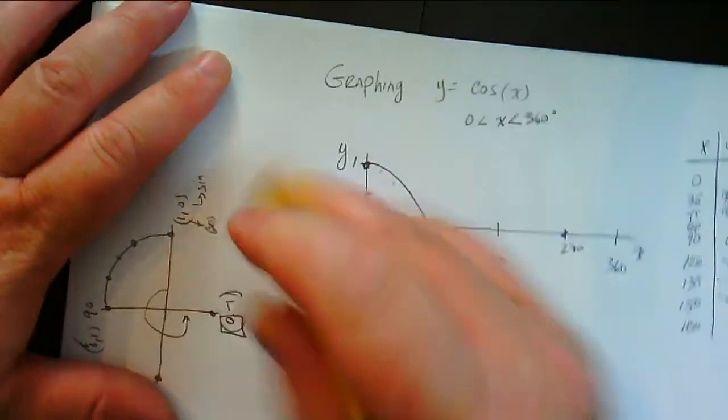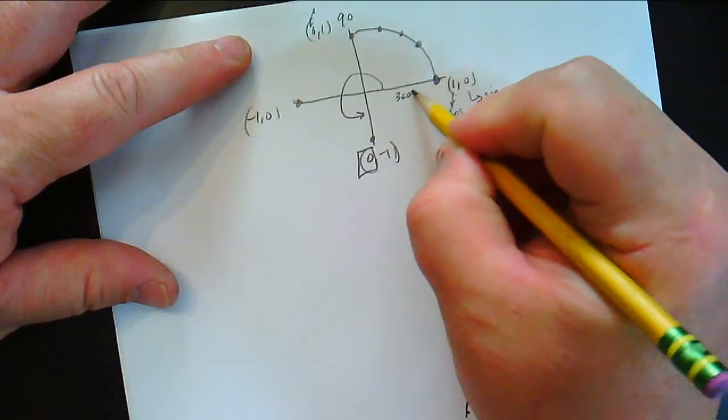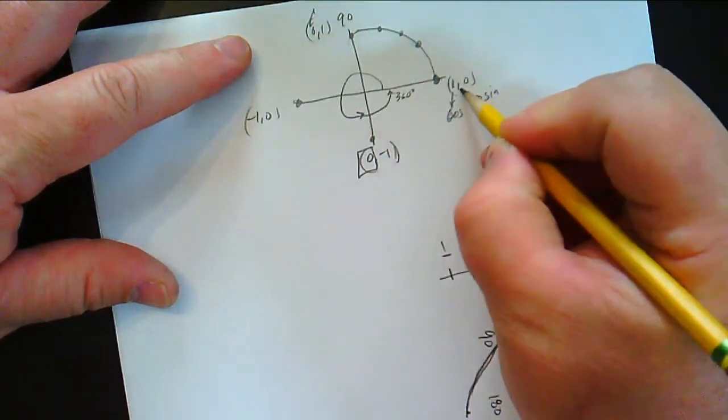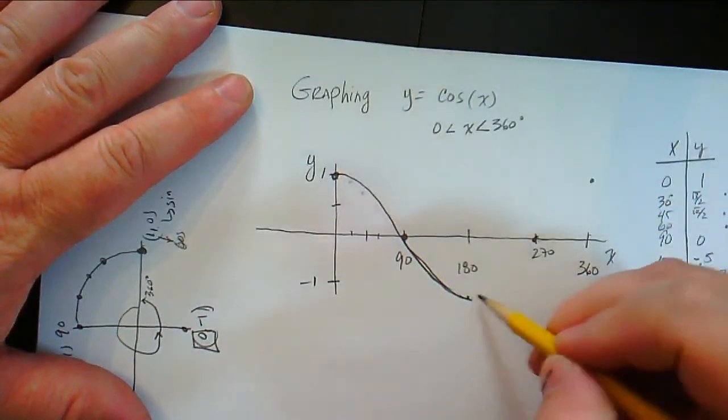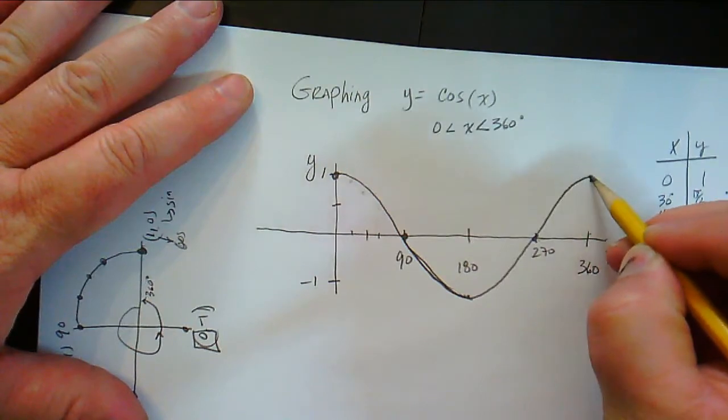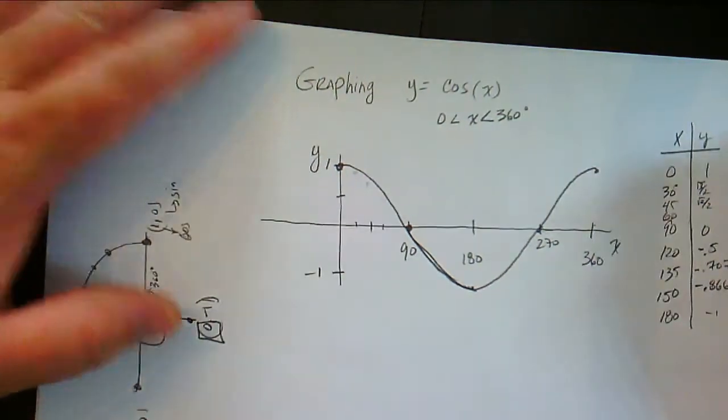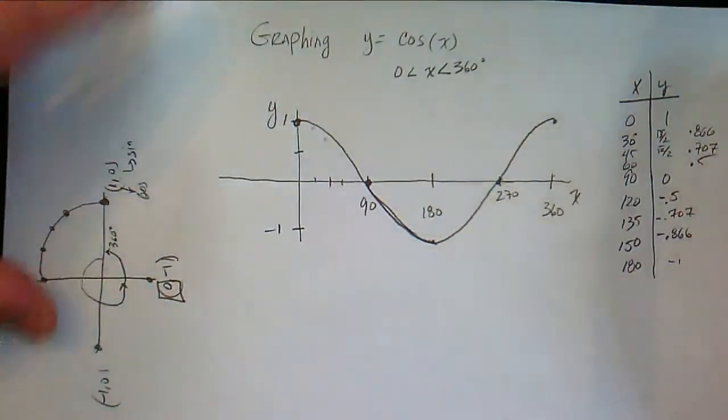And when we go back all the way around to 360, this is 360 degrees right here, when we go all the way around, we're back at 1, which is up here. So we're going to have to go right through here, like that. So that's one period of cosine, just regular y equals cosine of x.